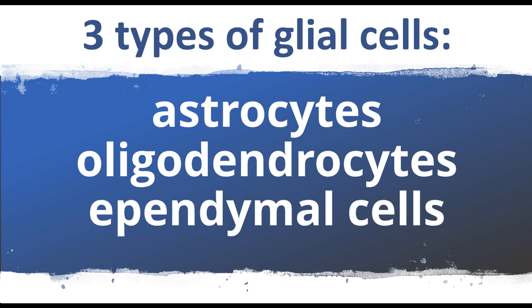Gliomas formed from oligodendrocytes are called oligodendrogliomas. Oligodendrocytes insulate nerve cells to help send nerve signals.